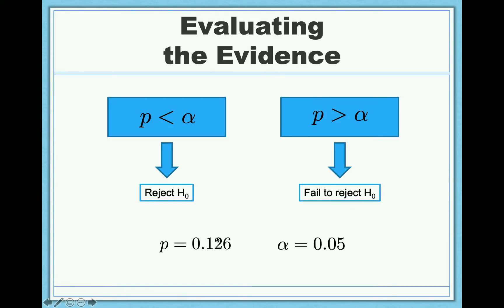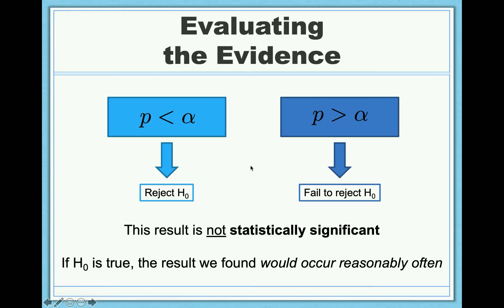So, going back to our data here, we had a p-value of 0.126 and an alpha level of 0.05. So what decision do we make? Is our p-value less than alpha, or is it greater than alpha? Well, in this case, our p-value is greater than our alpha level, and so we would fail to reject the null. Here's the decision we would make: we would say that this result is not statistically significant.